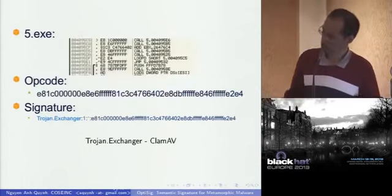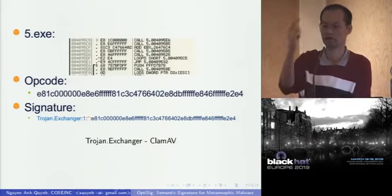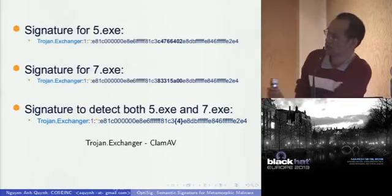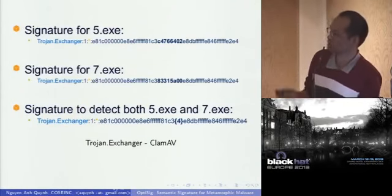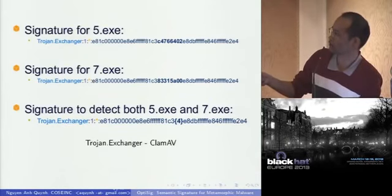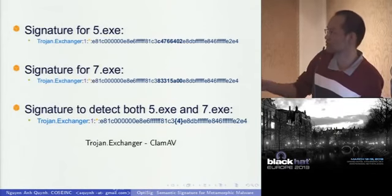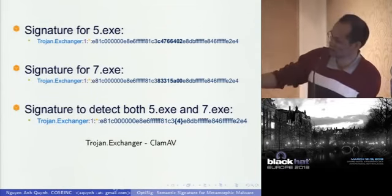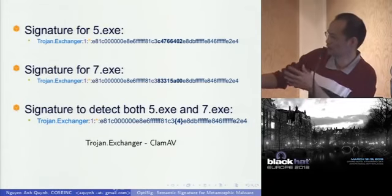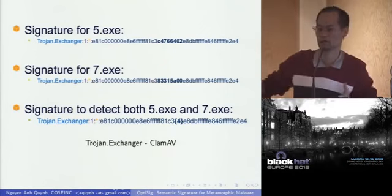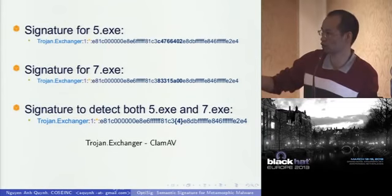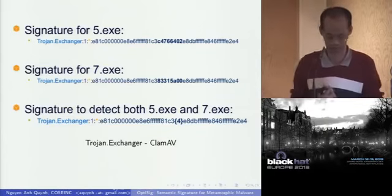The signature in this case is not very flexible because you need one signature per malware. So they use a more flexible signature using regular expressions. Here we have two malware variants, 5.x and 7.x. Their codes are very similar except 4 bytes in the middle. The first and last parts are the same, but those 4 bytes differ. They combine these into one signature where the middle 4 bytes can be anything. With this regular expression signature, they can detect both variants — more flexible.